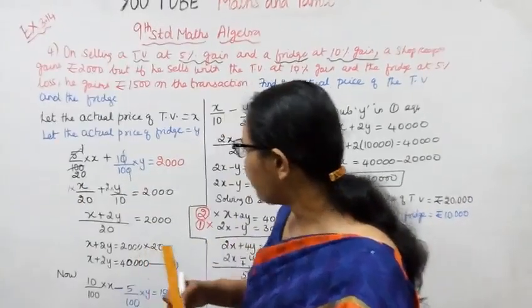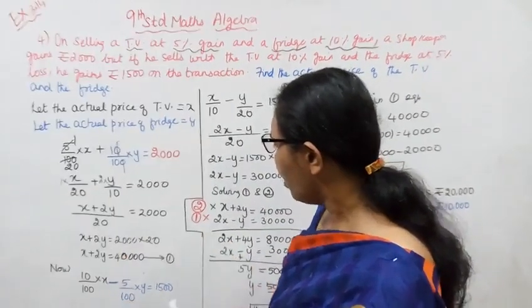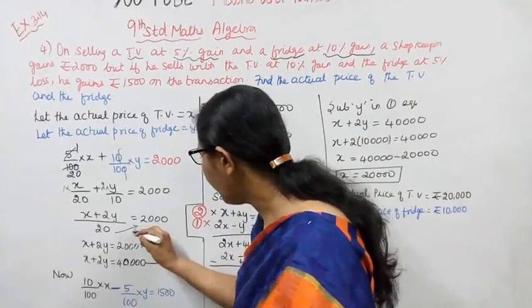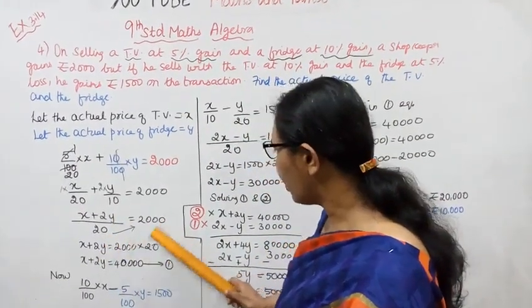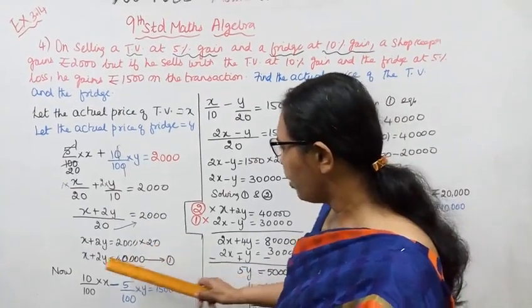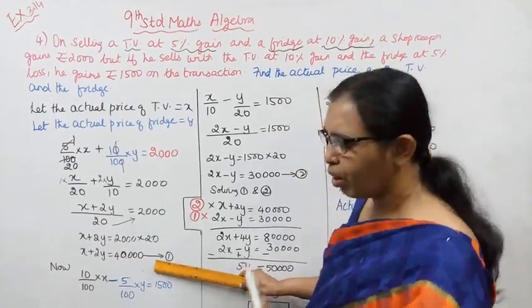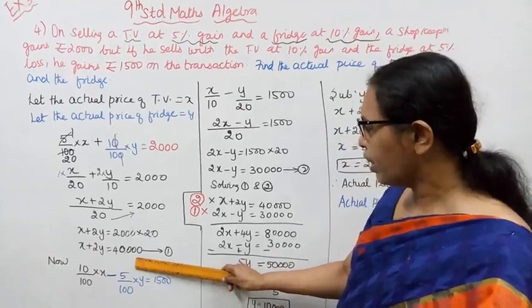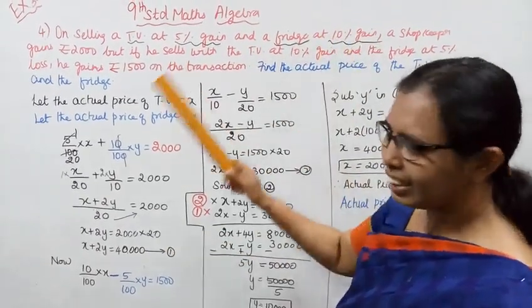Cross multiplying, X plus 2Y equals 2000 into 20, which gives X plus 2Y equals 40,000. This is the first equation.